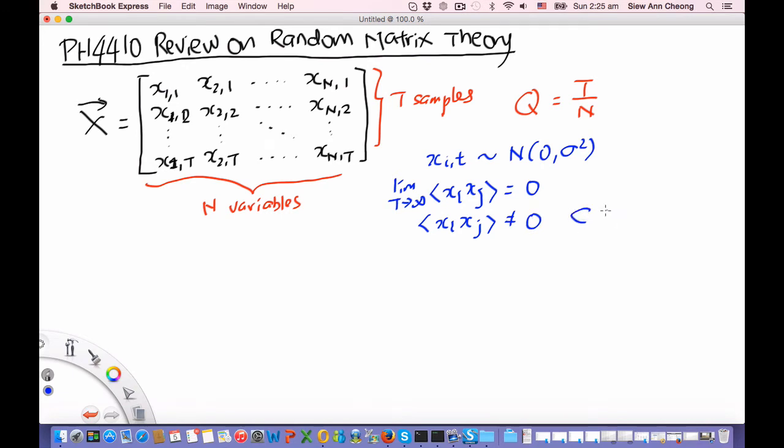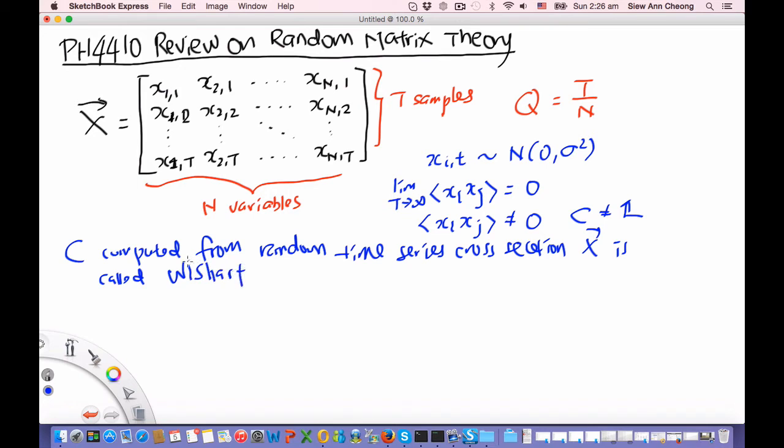Therefore our cross-correlation matrix is not simply the identity matrix. A cross-correlation matrix C computed from such a random time series cross-section is called a Wishart matrix. This is the family of random cross-correlation matrices.